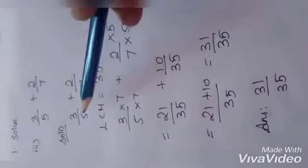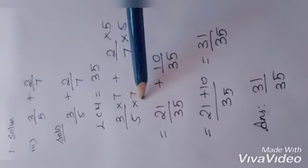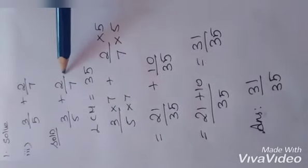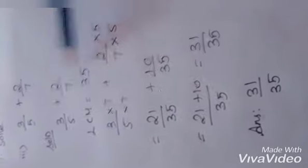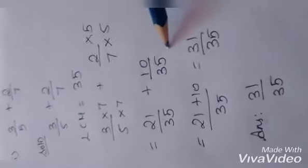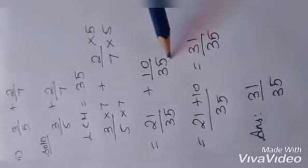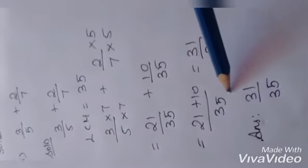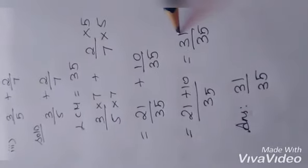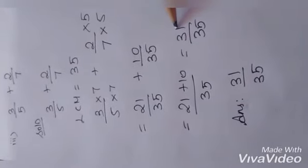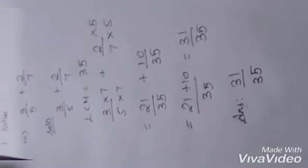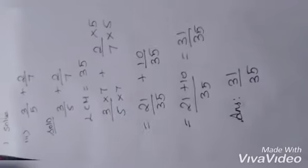I need to make both denominators equal to 35. For the first fraction, I multiply the denominator 5 by 7 and also multiply the numerator 3 by 7, giving 21 by 35. For the second fraction, I multiply 5 by 5 to get 25 — wait, numerator 2 by 5 gives 10 by 35. So it is 21 by 35 plus 10 by 35, which equals 31 by 35. This is a proper fraction, so no need to convert to a mixed fraction.